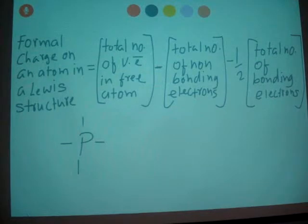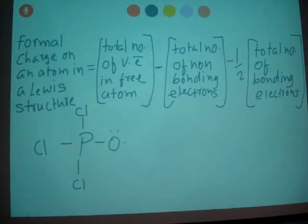let's draw the Lewis dot structure again. We know that chlorine and oxygen, they have 6 non-bonding electrons and one bonding electron.